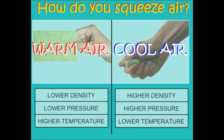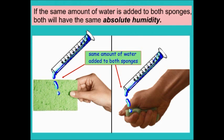So, by changing the temperature, we can squeeze the air. If the same amount of water is added to both sponges, both will have the same absolute humidity.